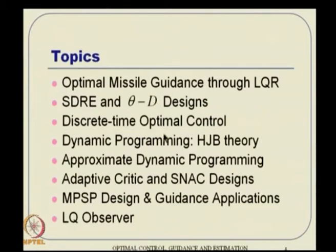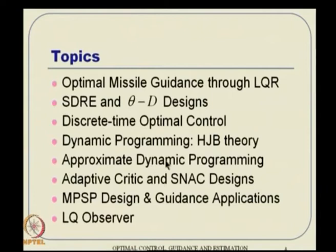Then we will follow a very different approach called dynamic programming, which essentially leads to the Hamilton-Jacobi-Bellman theory — very famous. The HJB theory overcomes the curse of complexity but leads to the curse of dimensionality. Because of this, people have thought about approximate dynamic programming in discrete settings. We will also discuss using approximate dynamic programming concepts for adaptive critic design, including single network adaptive critic design.